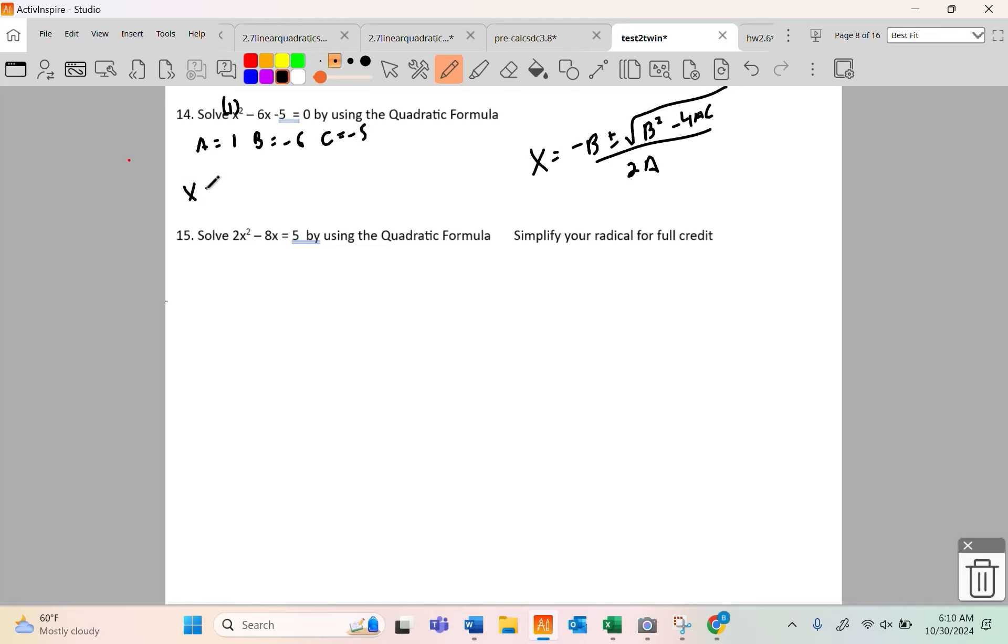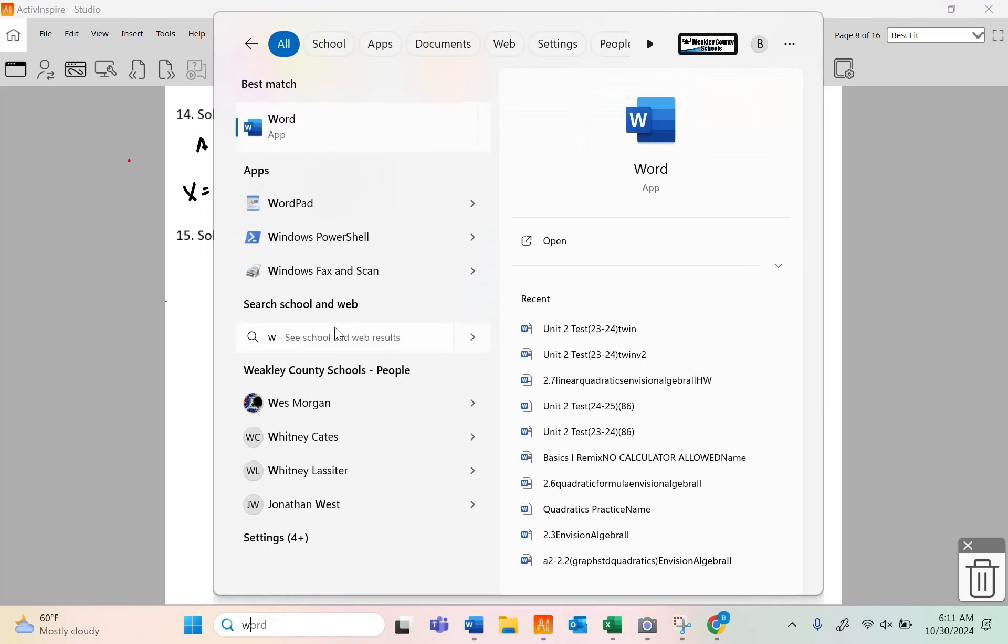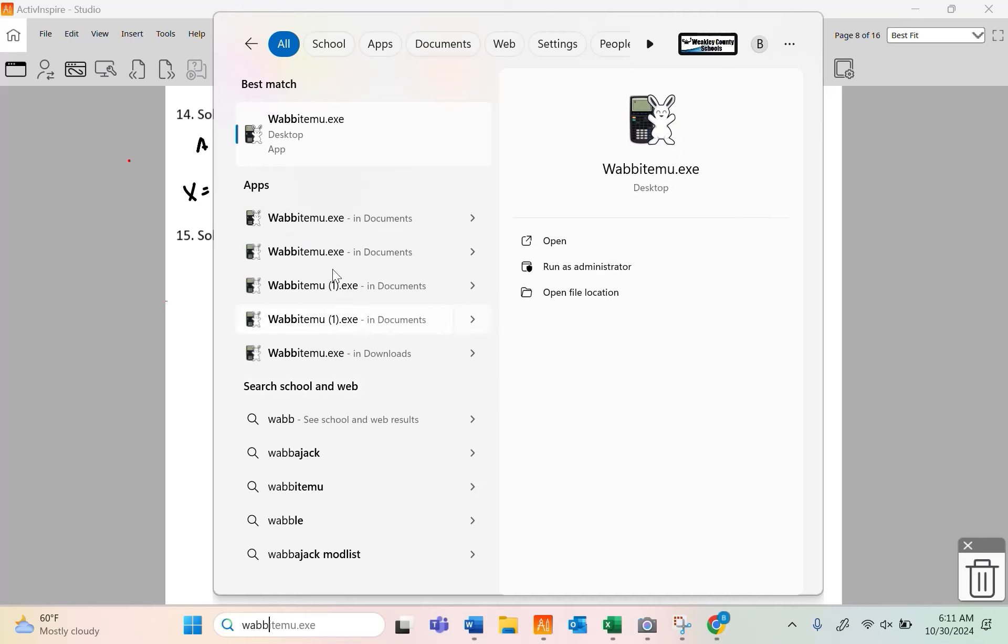Opposite of negative 6 is positive 6, so x is 6 plus or minus the square root of parentheses because you're probably a button pusher. Negative 6 all squared minus 4 times a, which is 1, times c, which is negative 5. There we go, all sitting pretty over twice a. In a perfect world you'd be able to do this kind of math by hand. Boy, a lot of y'all struggle.